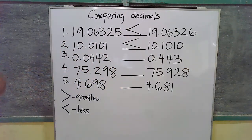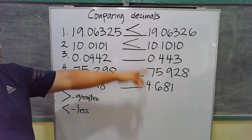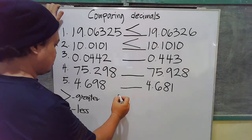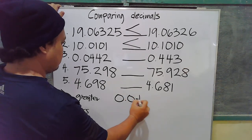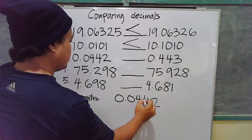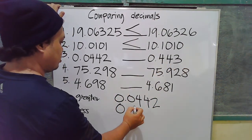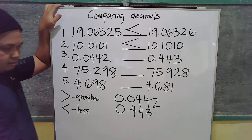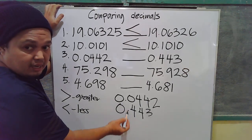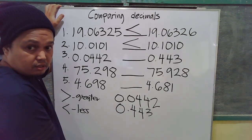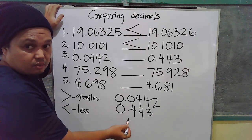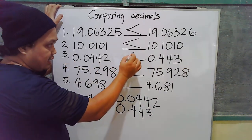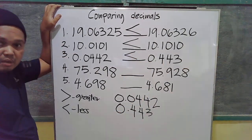Number three: compare 0.04442 to 0.443. To answer it quickly, let's align them. Now let's compare — the decimal points are aligned. Looking at the first digit after the decimal point: 0 here versus 4. Four is greater than 0, therefore 0.443 is greater than 0.04442, or to answer this: 0.04442 is less than 0.443.